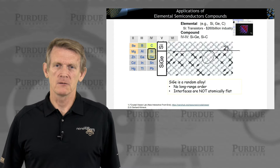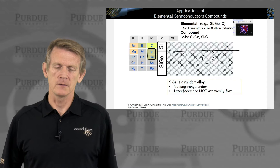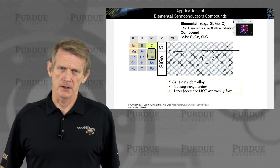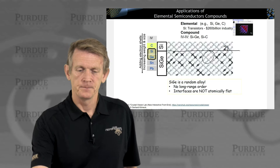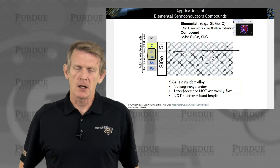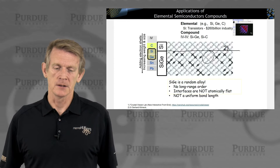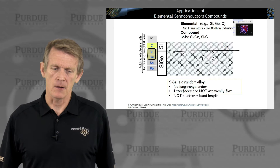If you are dealing with devices that are only a few nanometers small, interfaces become very important and you have to manage interface roughness quite carefully. The bond lengths in a SiGe alloy are not exactly the same, the crystal is not perfectly ordered, and there's no long-range order either — so you can't really describe it with a single unit cell.